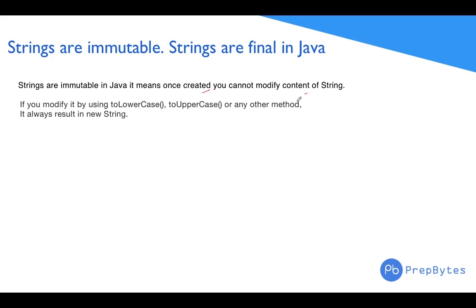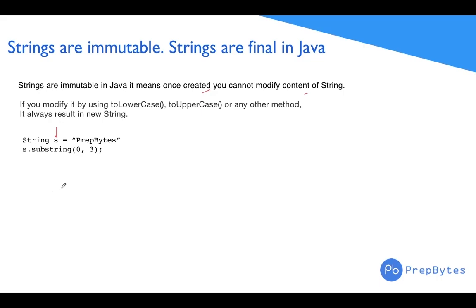The modification could be anything. For example, if we apply a toLowerCase operation or a toUpperCase operation on a particular string, if we try any method which modifies the content of the string, let's see what happens. Take the example of substring: we have string s = 'prepbytes'. When we do s.substring(0, 3), we are taking out a substring. Someone might think the result is assigned back to s, but if you print s after this operation, you will get the output as 'prepbytes'.